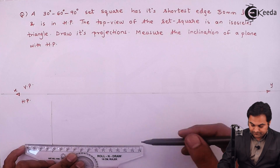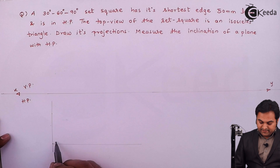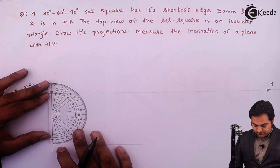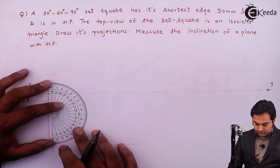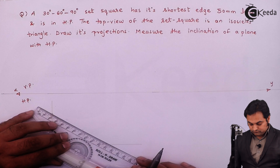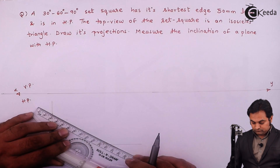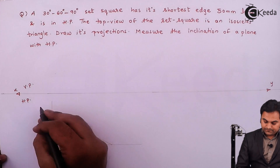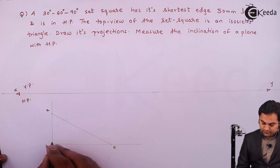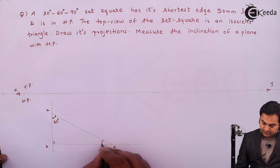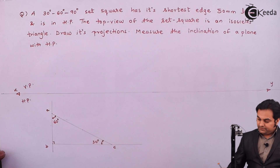Drawing a light horizontal line. For a set square when you have the shortest edge here, the angle is 90 degrees. From this location the angle is 60 degrees, so I'll be measuring 60 from here. This is the set square and I'll label the vertices A, B, and C. This angle is 90, this is 60 degrees, and the remaining angle is 30 degrees. I get the complete triangle and I'll make it dark.